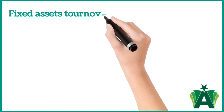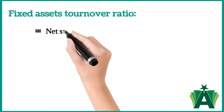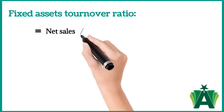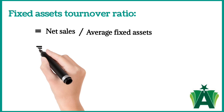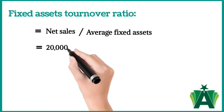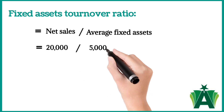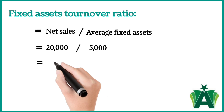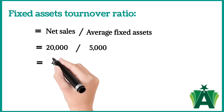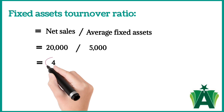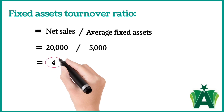Fixed Assets Turnover Ratio is calculated as net sales divided by average fixed assets. If a company's net sales are $20,000 and average fixed assets are $5,000, the fixed assets turnover ratio is 4. This means that for every dollar invested in fixed assets, the company generates $4 in sales.